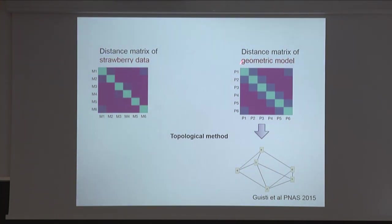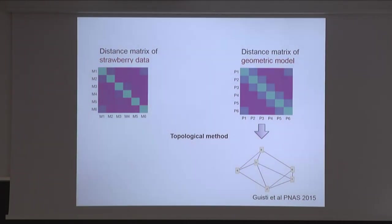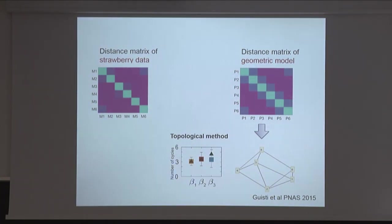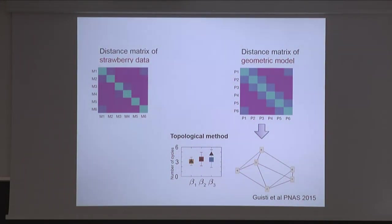Basically, given a distance matrix, we threshold it at a given level. If the correlation is higher than the threshold, we assign a link between nodes. Then we measure a set of cycles or holes in this network — this is my joke with Swiss cheese — and we can measure these cycles and holes in many dimensions. For those who work with topological analysis, it will be the Betti curves in one, two, and three dimensions: in one dimension two circles, kind of a prism, and also in three dimensions.